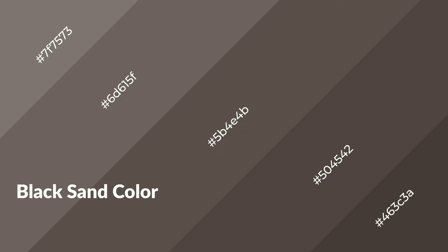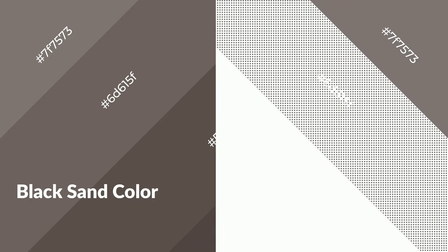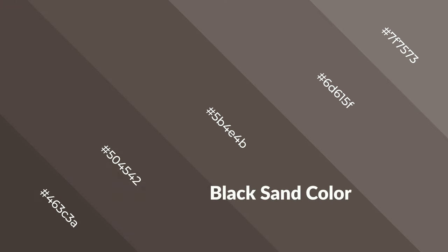Black sand is a warm color and it emits cozier and active emotions. Warm colors are symbols of warmth, fire, heat, and sunshine. It also evokes joy, passion, love, and even anger. You can see them used in restaurants and gyms.